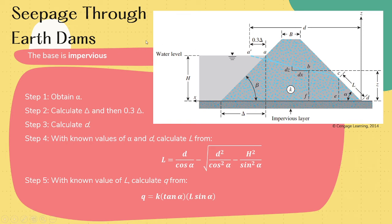The next topic is seepage through earth dams. In this discussion, the earth dam is said to have an impervious base, meaning the bottom layer, no water can flow through it.